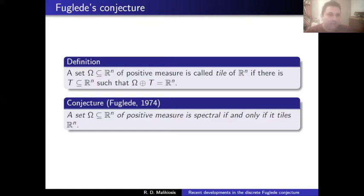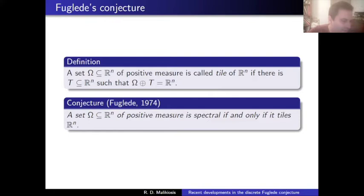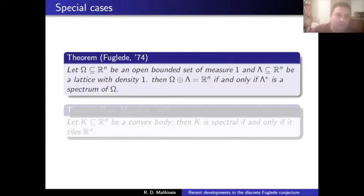Fuglede connected these two properties — the analytic and the geometric — in his 1974 conjecture: a bounded measurable set Ω of positive measure is spectral if and only if it is a tile. This arose from a functional analytic question — whether partial differential operators on R^n have self-adjoint restrictions on L²(Ω). This characterization of sets Ω satisfying this property was how the conjecture arose.